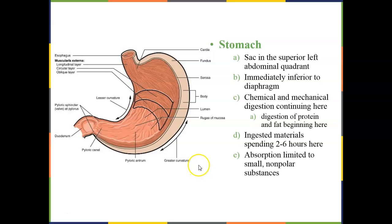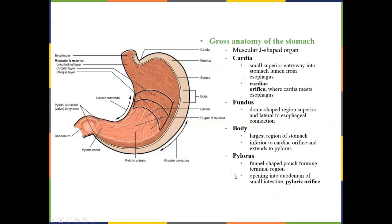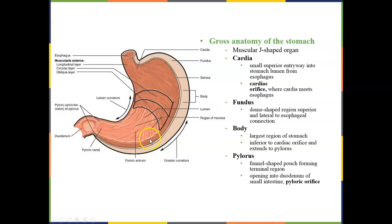Welcome to this fourth lecture in chapter 23, talking about the stomach. There are four main regions: the cardia, where the esophagus moves food into the stomach; the fundus, a large barrel or dome-shaped region; the body; and the pylorus at the very end. At the end of the pylorus is a sphincter known as the pyloric sphincter, which controls movement of materials from the stomach into the small intestine.